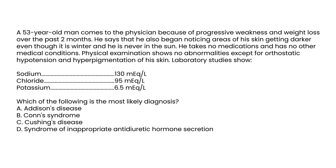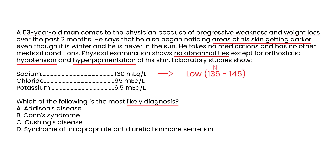Clinical vignette 1: A 53-year-old man presents with progressive weakness and weight loss. He's noticed areas of skin getting darker even though it's winter and he hasn't been in the sun. Physical exam shows orthostatic hypotension and hyperpigmentation. Lab studies show low sodium and high potassium. With hyperkalemia, hyponatremia, hyperpigmentation, and low blood pressure, the most likely diagnosis is Addison's disease.